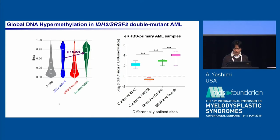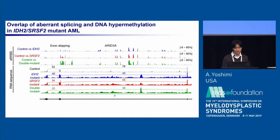This is a somewhat complex figure, but I would like to highlight that at the differentially spliced sites between SRSF2 single mutant and double mutant AML, there is much higher DNA methylation. This figure shows an example of overlapping aberrant splicing and DNA methylation. The gene DNMT3A has exon 2 skipping in double mutant AML, which is coupled with DNA methylation as determined by ERRBS in double mutant AML.